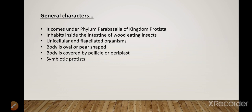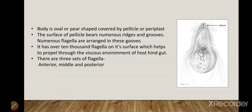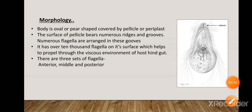Trichonympha are symbiotic protists. Their body is covered by a pellicle or periplast, which is a thin layer of protein supporting the cell membrane in various types of protozoa. The surface of the pellicle bears numerous ridges and grooves.